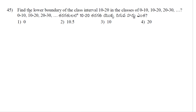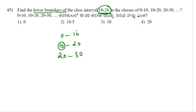Find the lower boundary of the class interval 10 to 20, given classes 0-10, 10-20, 20-30. The lower boundary of the 10-20 class is 10. The previous class has upper boundary 10, and since both are the same, we take 10 directly as the lower boundary. Option 3 is correct.